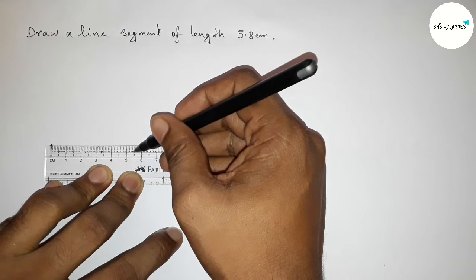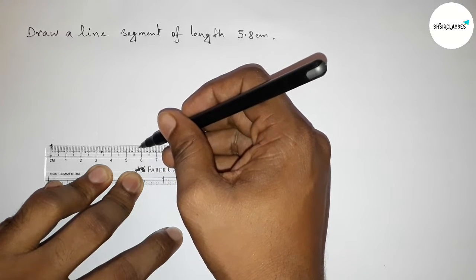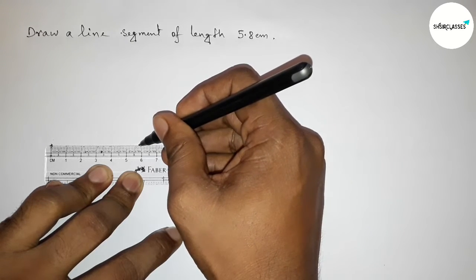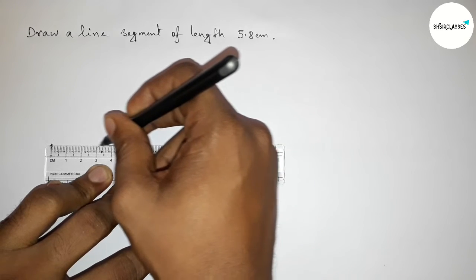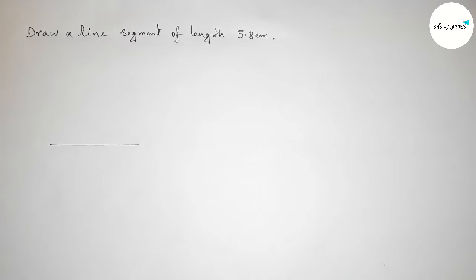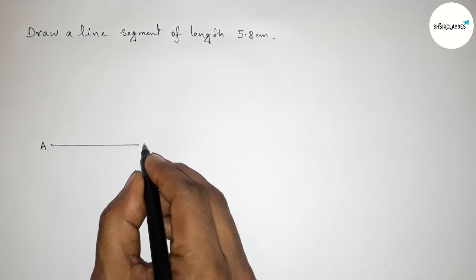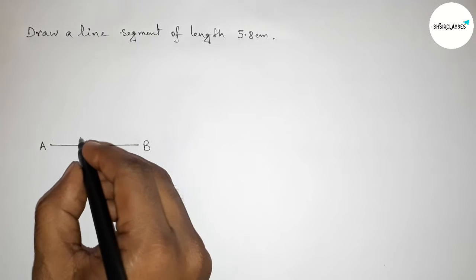And this is 5.5, six, seven, and this is eight. So this is 5.8 centimeter. So after 5.5 we have to count three extra. So now joining this line and taking here point A and here B. So AB is a line segment of length 5.8 centimeter.